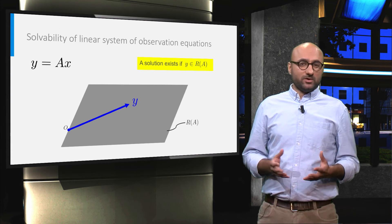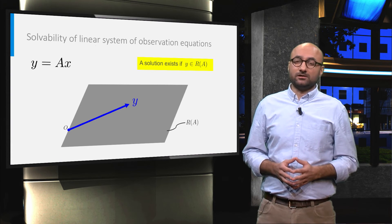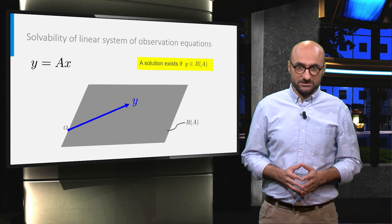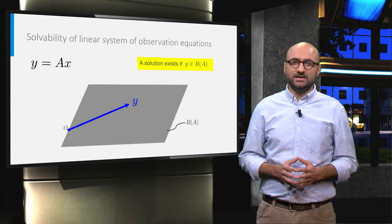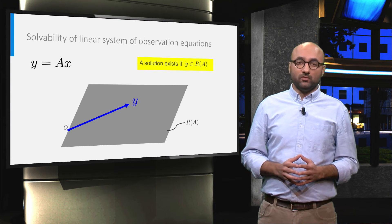Systems of equations for which this holds are called consistent systems. In other words, if the system is consistent it means it has at least one solution.